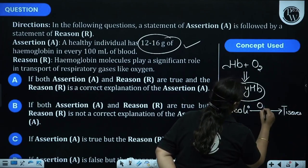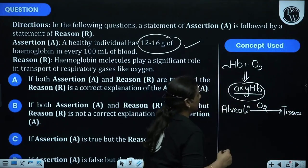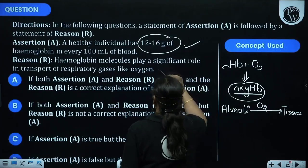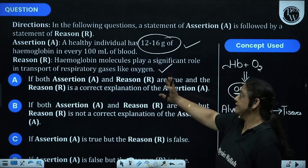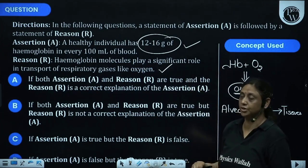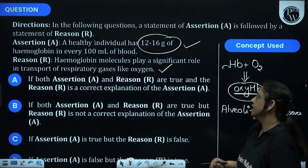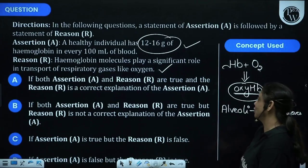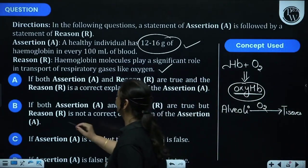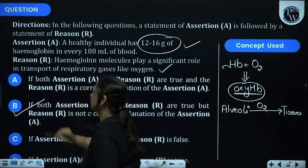Oxygen transport is done by oxyhemoglobin. This statement is correct. So assertion is correct, reason is correct, but reason is not explaining assertion. So what will be the right answer? B will be the right answer. A and R both are true but R is not the correct explanation of the question.